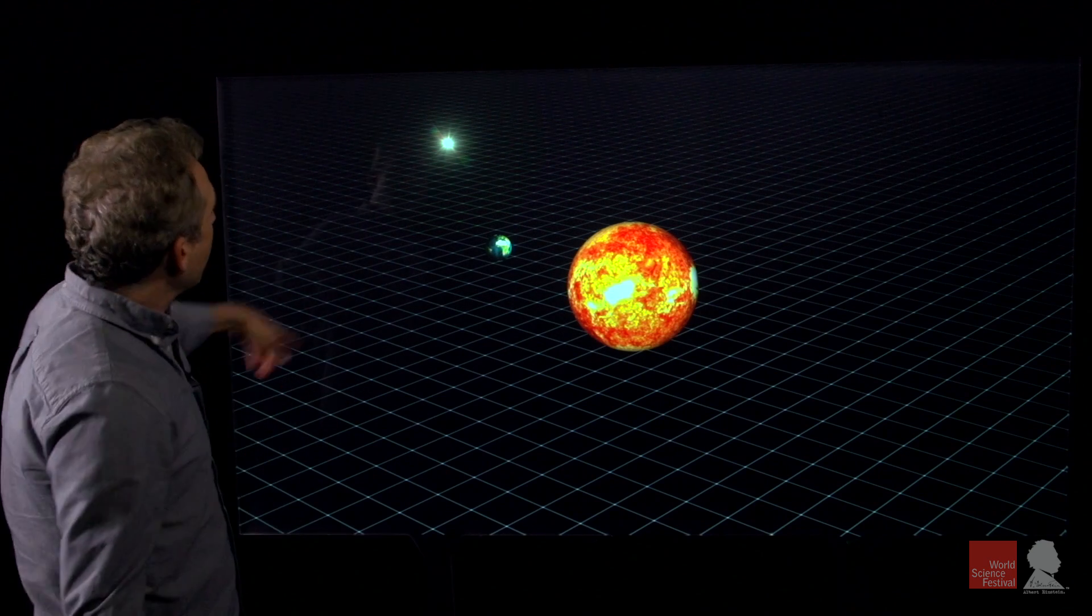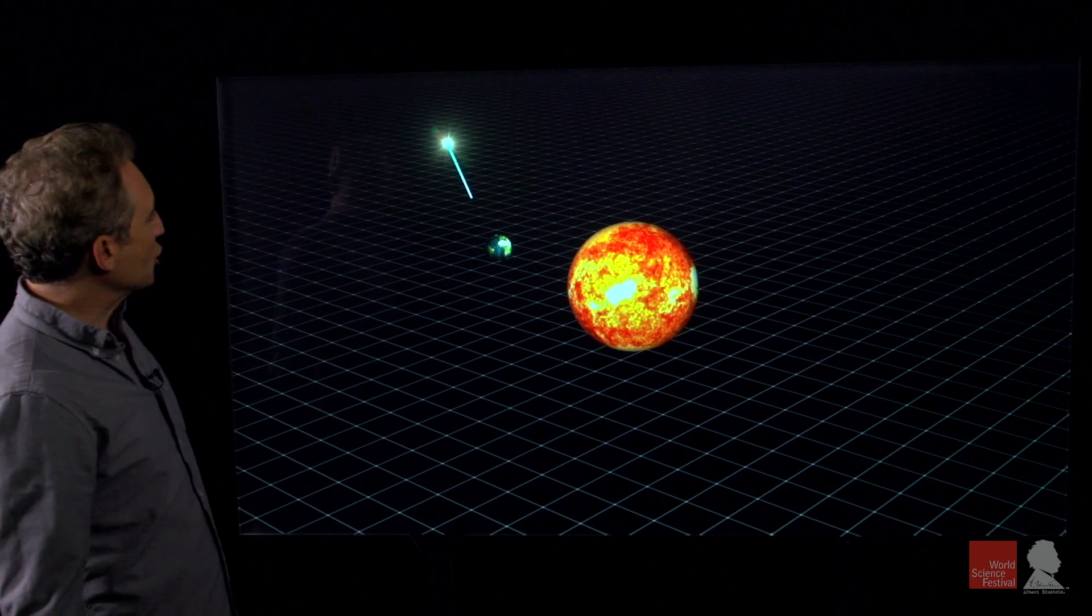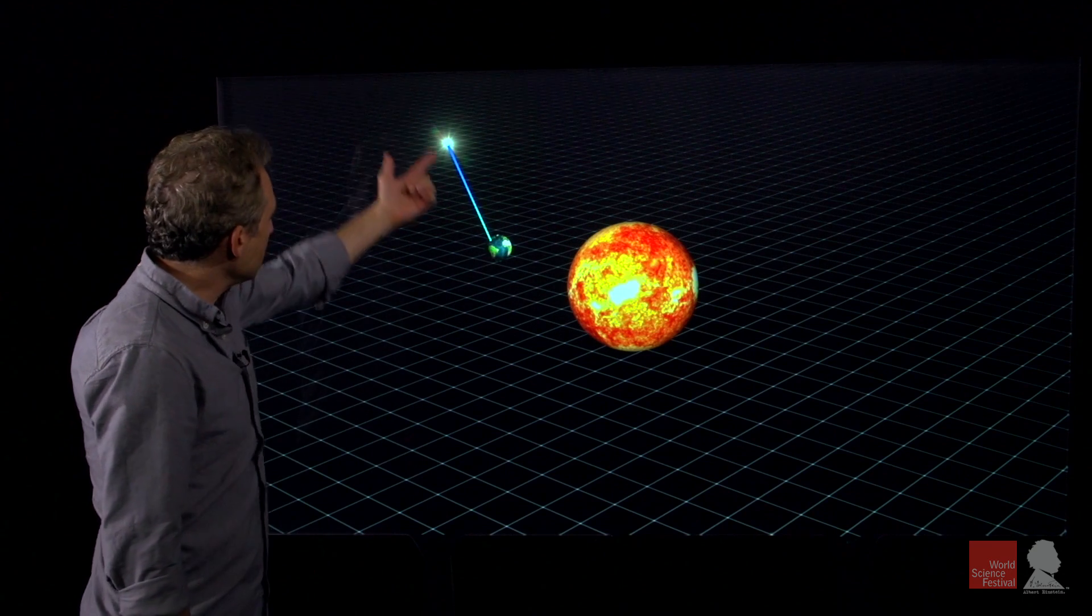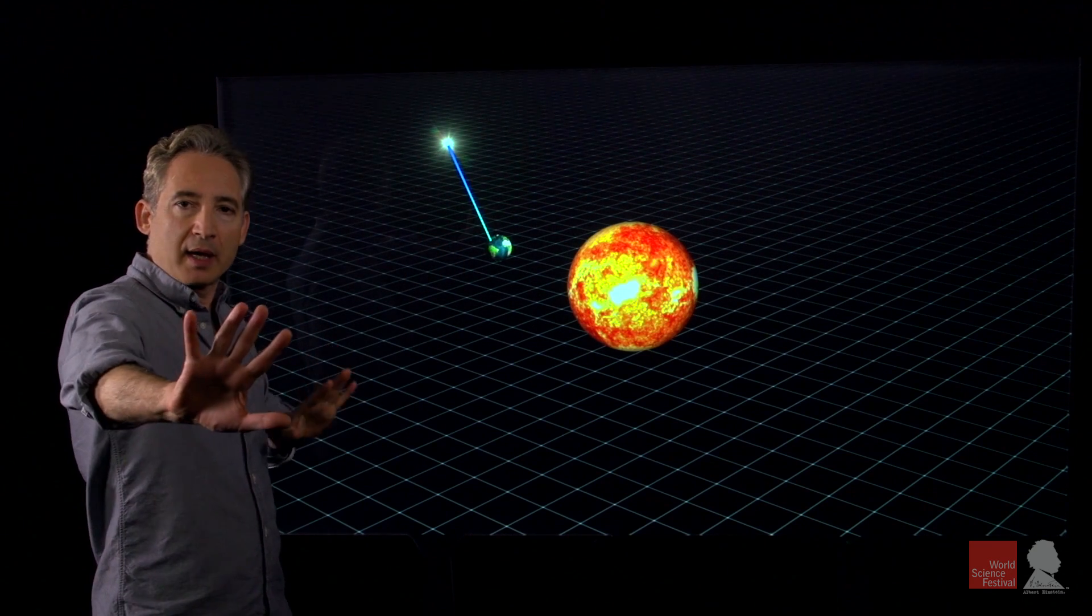So Einstein says, look, imagine that we're observing a distant star when the Earth is on this side of the sun. The star's light will just go on a nice straight line trajectory.